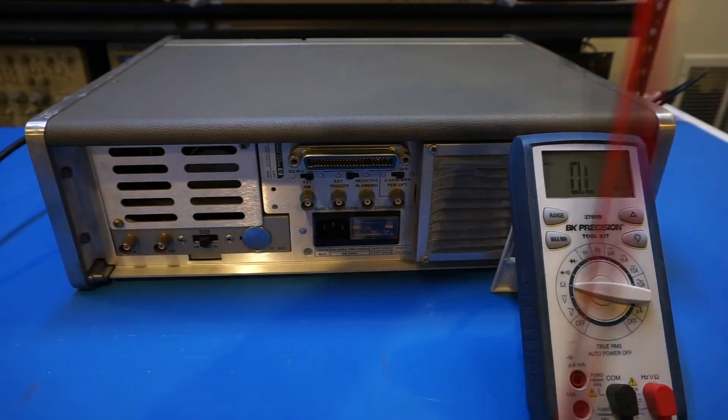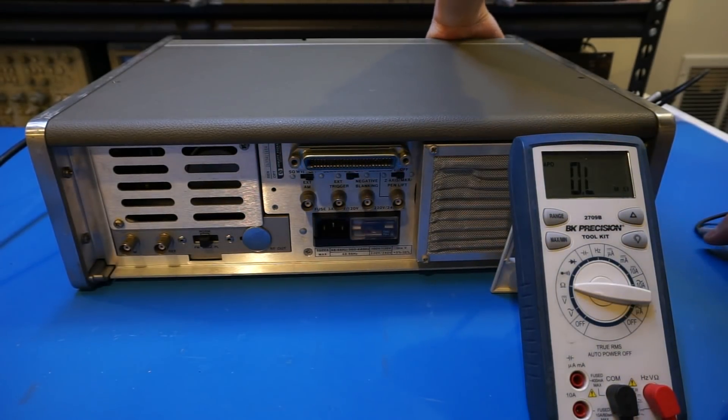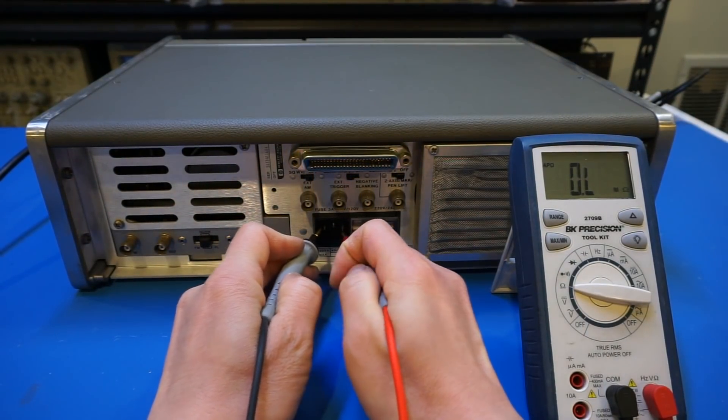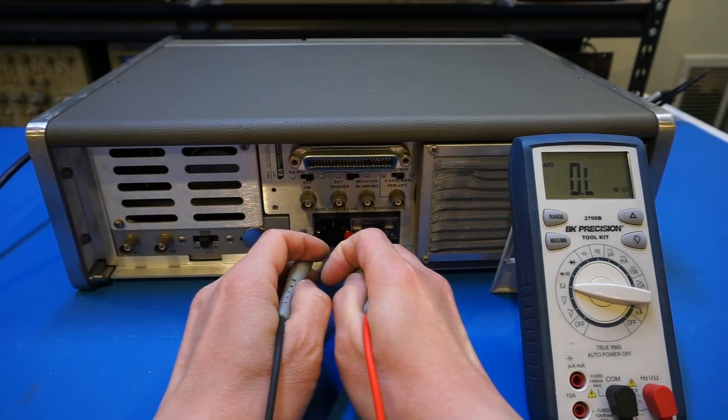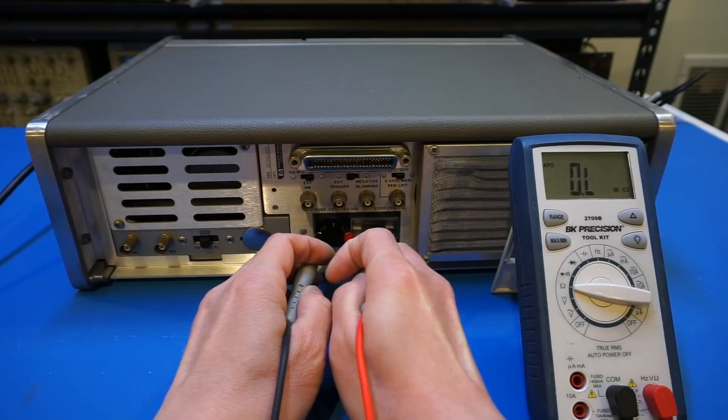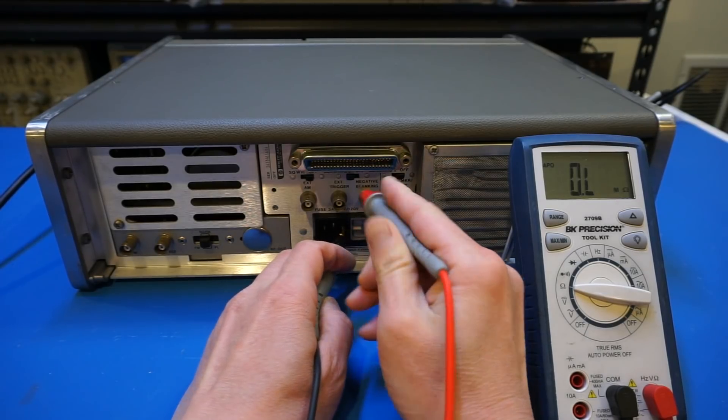And now if I turn it on, so I would expect that we measure some kind of resistance because of the primary of the transformer. But again, there's nothing. And as you can see here, it doesn't appear to be anything.